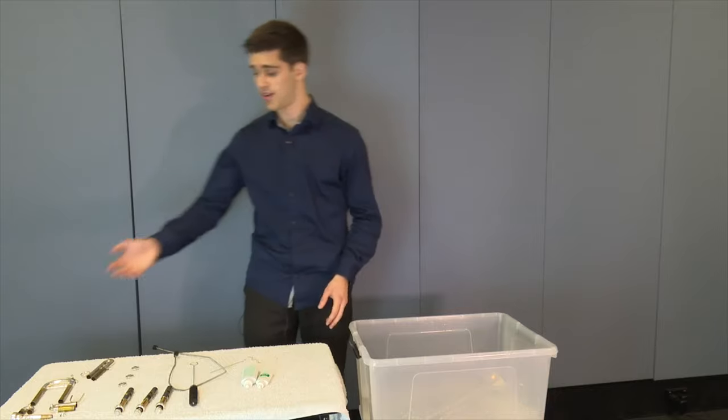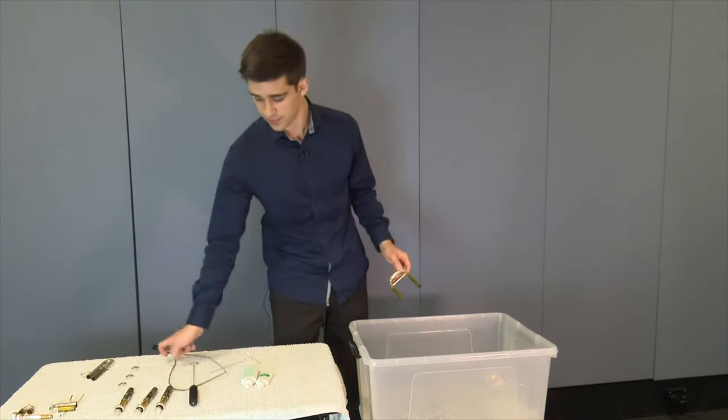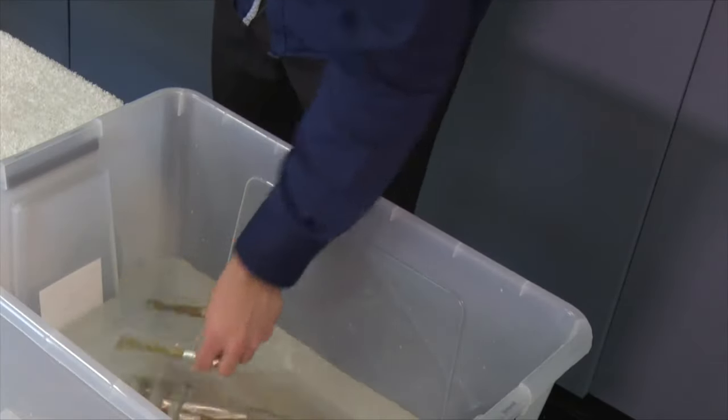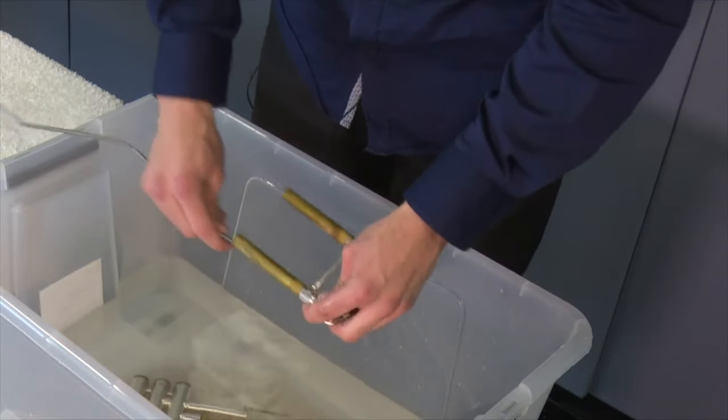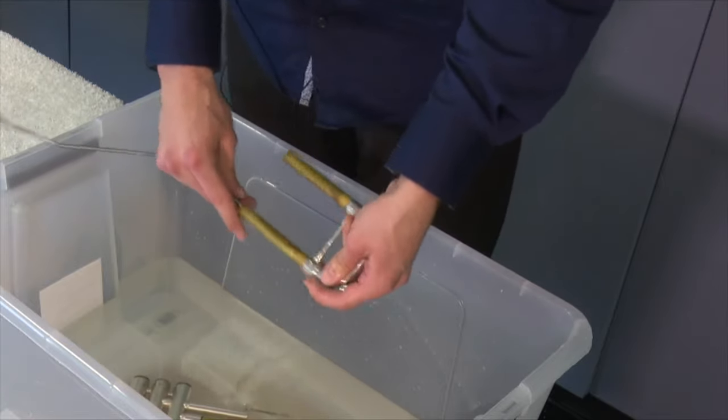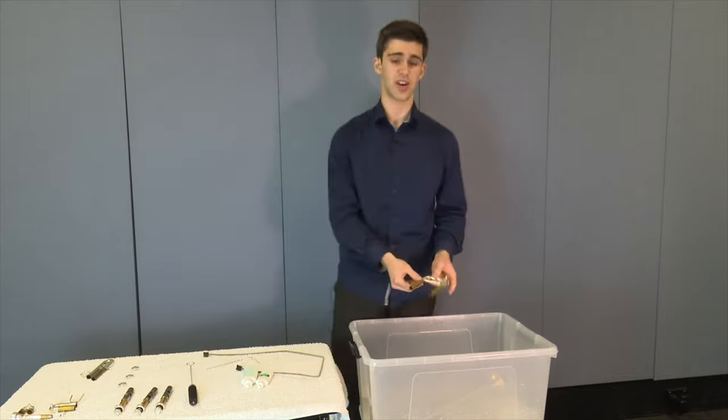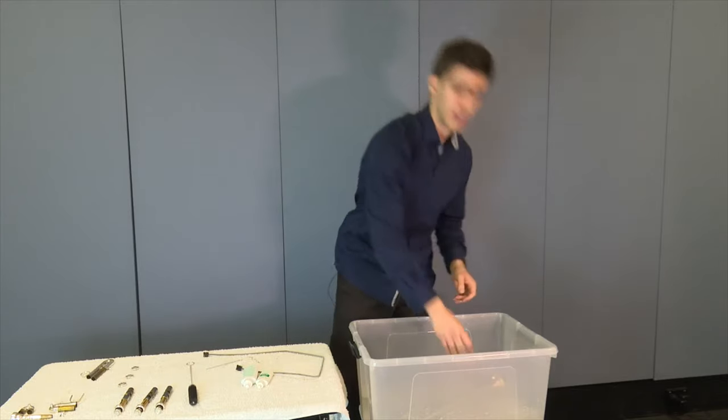The next step is to get the slides that we have taken out of our trumpet. So we're getting our tuning slide. Once again, getting the snake coil, dipping the slide into the water, and pushing it through. You may be met with some resistance as the snake coil tries to go around the crook. Once you're done cleaning the inside of the tuning slide, you then place it into the water.